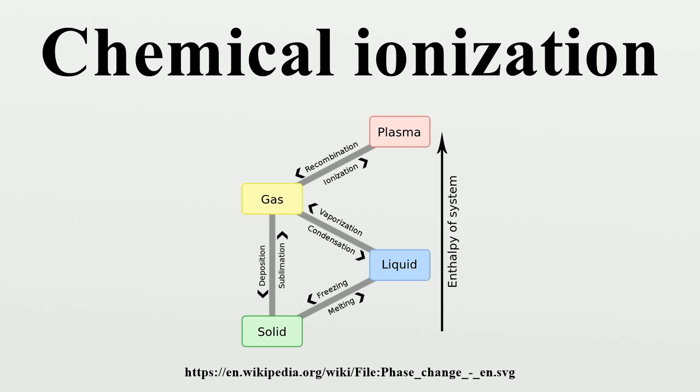Electrons entering the source will preferentially ionize the reagent gas. The resultant collisions with other reagent gas molecules will create an ionization plasma.